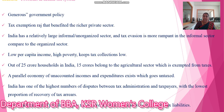In India, the taxation system faces a lot of problems — likewise, generous government policy, low per-capita income, high poverty, and low tax collection. Out of 25 crore households in India, 15 crore belong to the agriculture sector which is exempted from taxation. A parallel economy of unaccounted income and expenditure exists which goes untaxed. The actual number of people who pay taxes is low because many report zero tax liability.